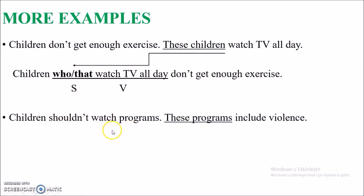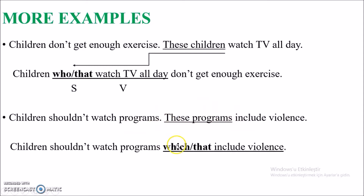Second example: 'Children shouldn't watch programs' and 'These programs include violence.' The common point is 'programs'. So: 'Children shouldn't watch programs which/that include violence.' After the pronoun, there is directly a verb — 'include' — so this is a subject relative pronoun. The rule is: if you have the verb directly after the pronoun, it is a subject relative pronoun, and you cannot omit 'which' or 'that'. You have to use either one in these kinds of sentences.